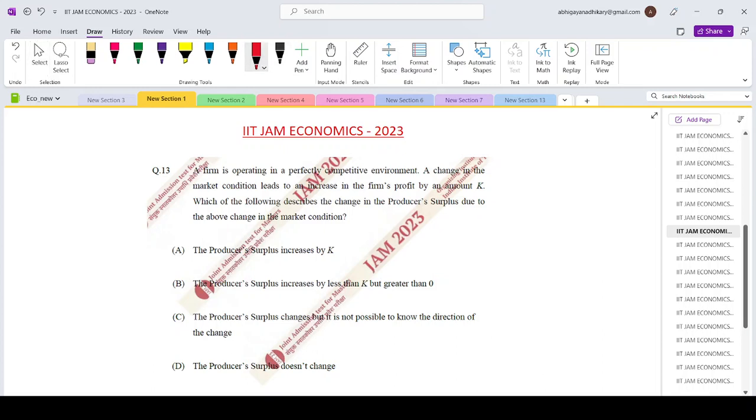Hello everyone, welcoming you to Shore of Search classes. Today we are looking at IIT JAM Economics paper 2023, question number 13. A firm is operating in a perfectly competitive environment. A change in the market condition leads to an increase in the firm's profit by an amount of k. Which of the following describes the change in the producer's surplus due to the above change in the market condition? The producer surplus increases by k, the producer surplus increases by less than k but greater than zero, producer surplus changes but it is not possible to know the direction of the change.